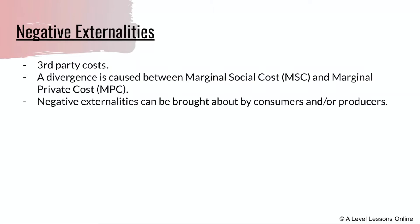When we look at negative externalities, it already comes with a negative connotation. Essentially what it refers to is third party costs — we're no longer looking at benefits, we're looking at costs that third parties who are not directly involved in this economic transaction actually face or suffer. This causes a divergence between your MSC (marginal social cost) and your MPC (marginal private cost). Negative externalities can be brought about by consumers or producers, so depending on the question, you need to identify whether it's a production or consumption issue.